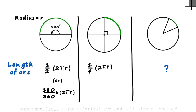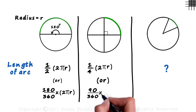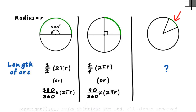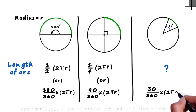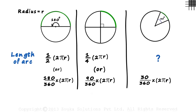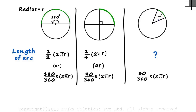You will understand better with this second example. This arc subtends an angle of 90 degrees at the center, so its length will be 90/360 multiplied by 2πr. Now, what will be the length of this arc if the angle subtended by it is 30 degrees? It will be 30/360 multiplied by 2πr. The angle subtended by the arc at the center is a part of the angle covered by the entire circle, which is 360 degrees.